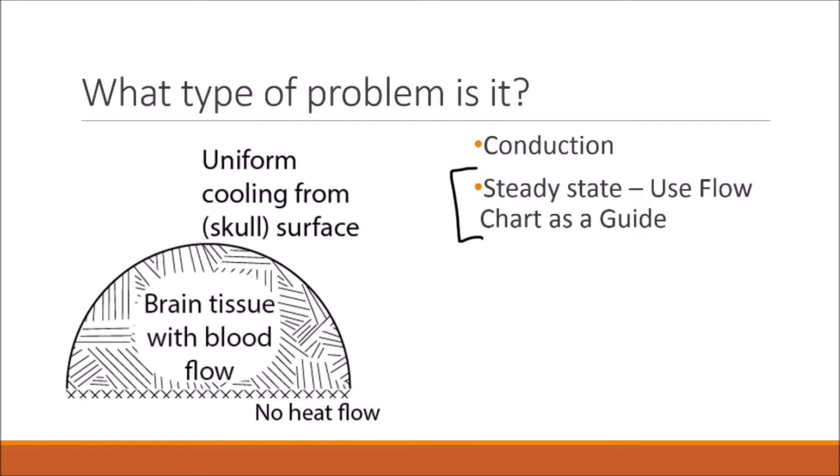We're also told that the outer surface of the brain is held at a temperature of 30 degrees Celsius. And because this outer surface is held at 30 degrees Celsius, there's a temperature gradient between the inside of the brain and the surface that is causing heat to be lost. So we know we're dealing with some type of conduction problem.